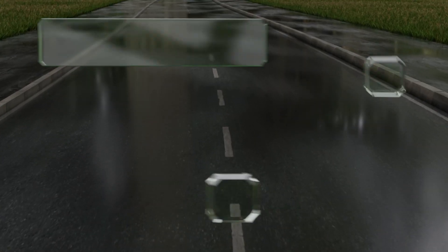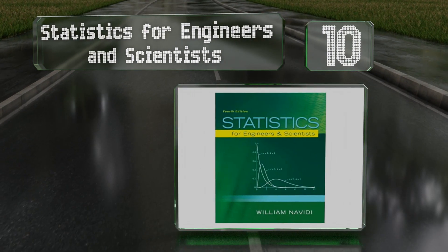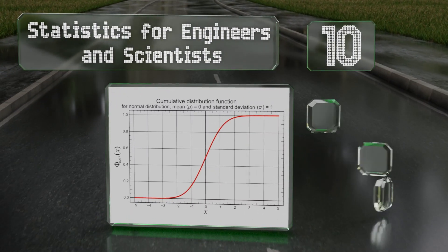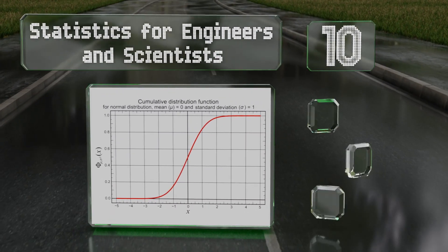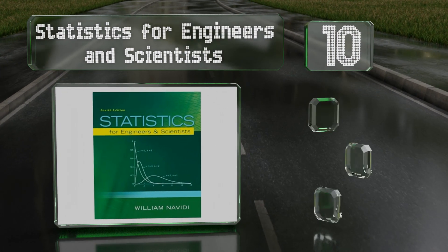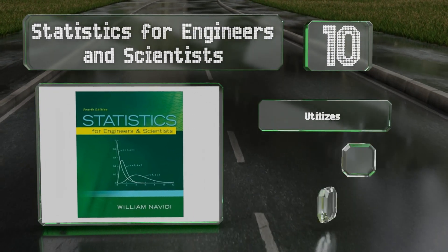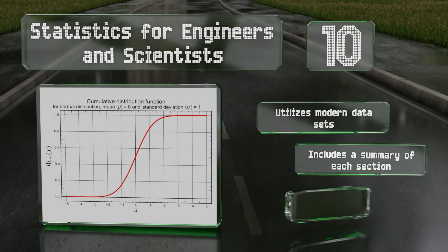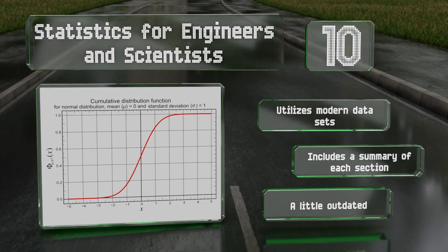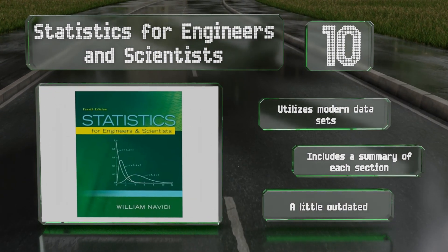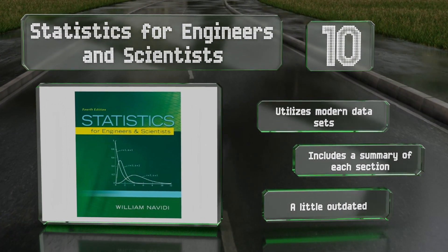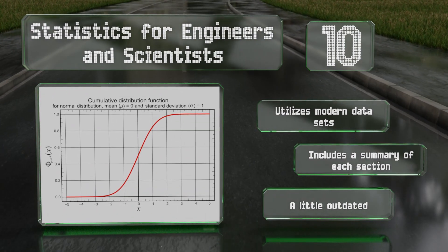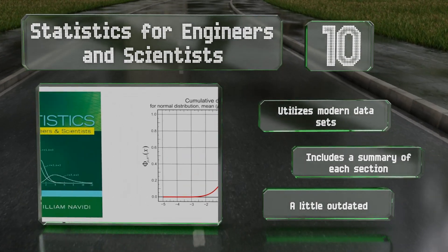Starting off our list at number 10, Statistics for Engineers and Scientists does indeed focus on the types of modeling and information analysis most often used in the two fields in the title. But despite the difficult subject matter, the author uses an engaging writing style effectively to prevent readers from becoming frustrated. It utilizes modern data sets and includes a summary of each section. However, it is a little outdated.